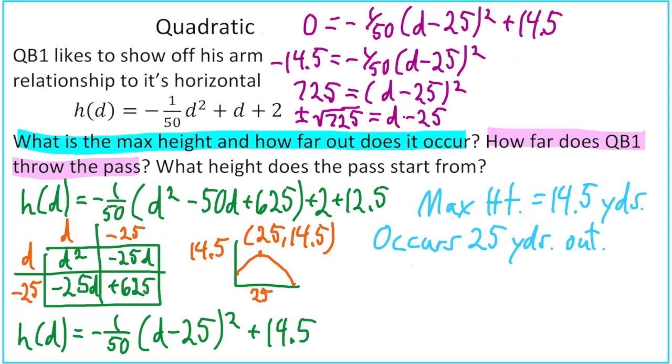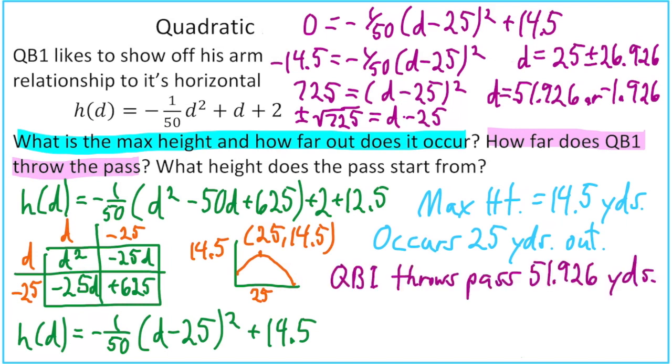Now I'm going to take my negative 25 and move it to the other side. I'm going to switch it around and write d equals, so I have 25 plus or minus. And since this is a word problem, I'm going to go ahead and change my radical 725 into a decimal, and I'll go to three decimal places. So we get two answers from this. We get 51.926, or if I go 25 minus the 26.926, we get negative 1.926. Now what often happens in a word problem is we're going to use the positive answer, because the idea of the negative answer doesn't make sense for this problem. There is no negative horizontal distance. So our answer for how far does QB1 throw the pass is 51.926 yards.